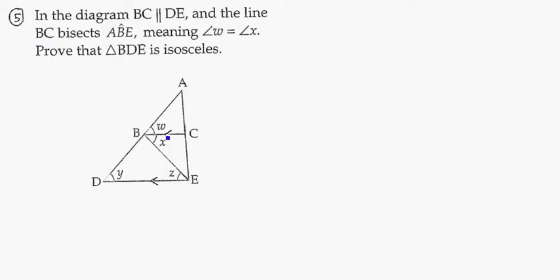And the line BC, this one here, bisects, means it splits in half the angle ABE.